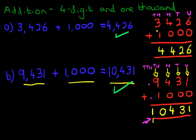That is correct. And that is how we do addition of four-digit numbers and one thousand using the vertical format. Thank you.